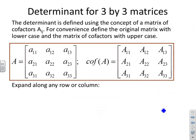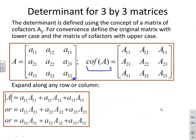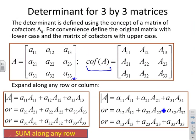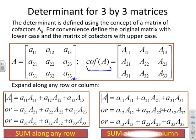Just a reminder: the definition of a determinant for a 3x3 matrix requires the original matrix A, the matrix of cofactors, and then expanding along any row or column — coefficient times corresponding cofactor. We'll demonstrate this definition with a few examples.